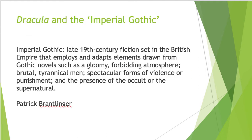That is, late 19th century fiction set in the British Empire that employs and adapts elements drawn from Gothic novels such as a gloomy forbidding atmosphere, brutal tyrannical men, spectacular forms of violence or punishment, and the presence of the occult or the supernatural. In this subset of the Gothic, the conventional elements of the genre — tyranny, entrapment, violence — are mapped onto the realities of empire and colonialism, enslavement and massacre, imperial seizure and control, and other atrocities committed under empire.